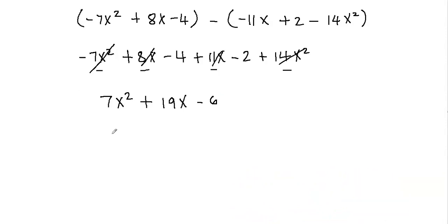That means the highest power, the term that has the highest power goes first, followed by the term that has the next highest power, and then so on. So I have x squared in the first term, then I have x, and then this one doesn't have x to it. So this is already in standard form and this will be my final answer.